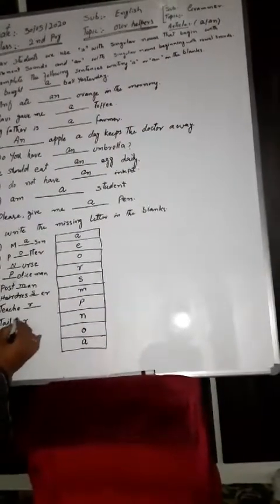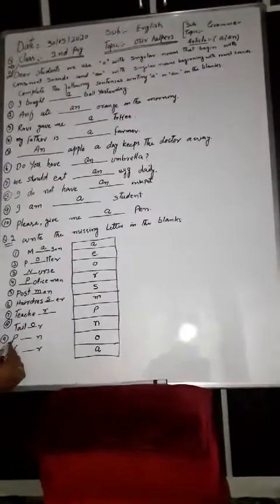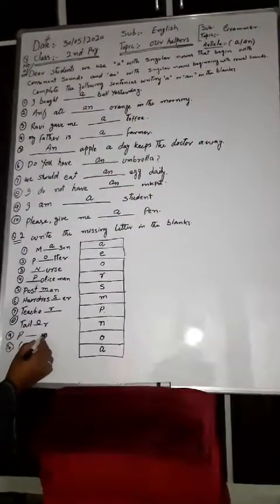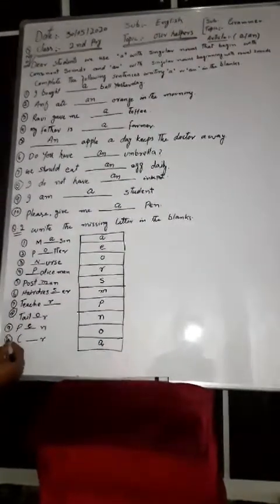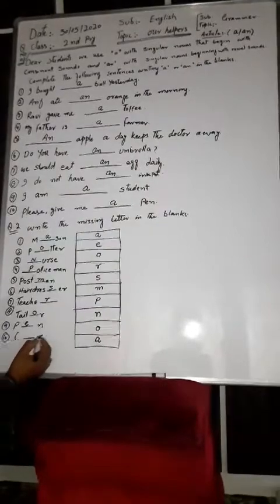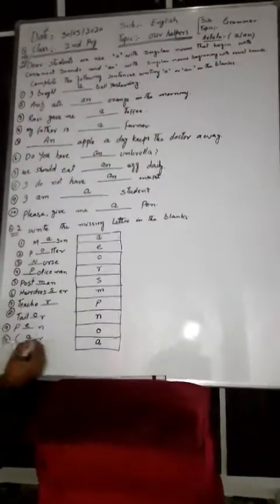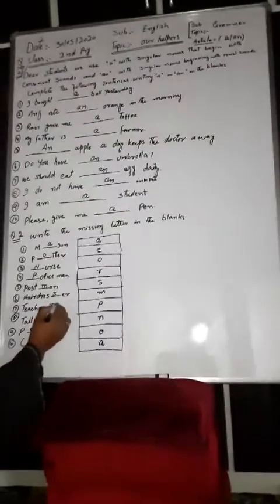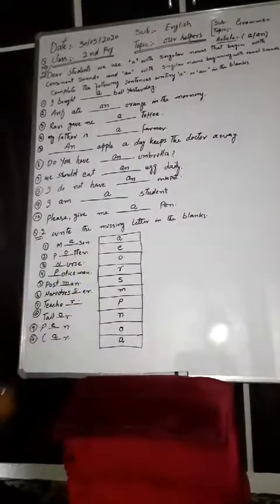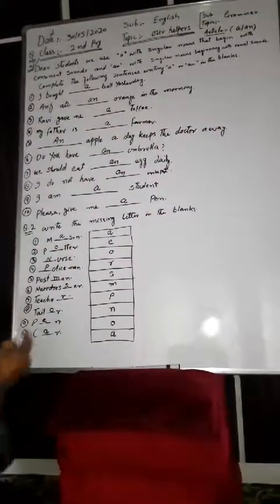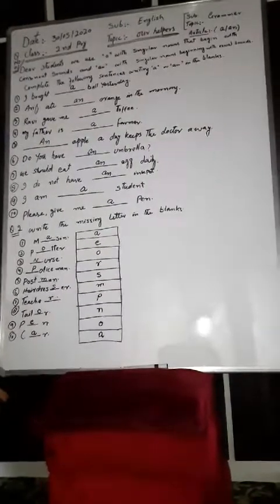T, A, I, L, dash, A, R - tailor. P dash, N - pen. Then C dash, A, R - C, A, R is car. Complete the lesson. Thanks. See you again. Insha Allah, we will continue tomorrow. Thanks and goodbye.